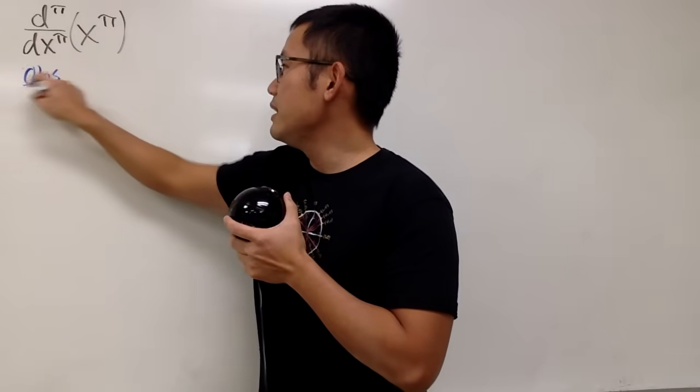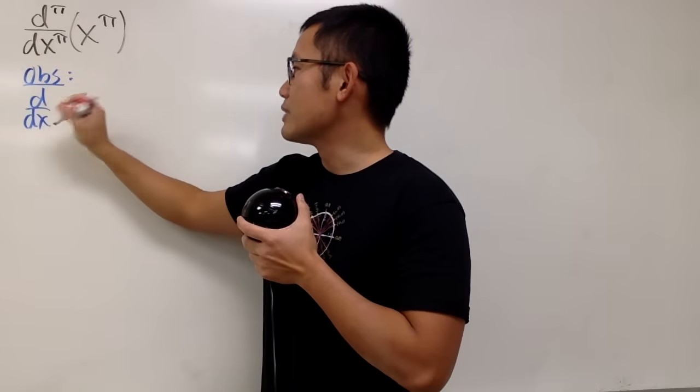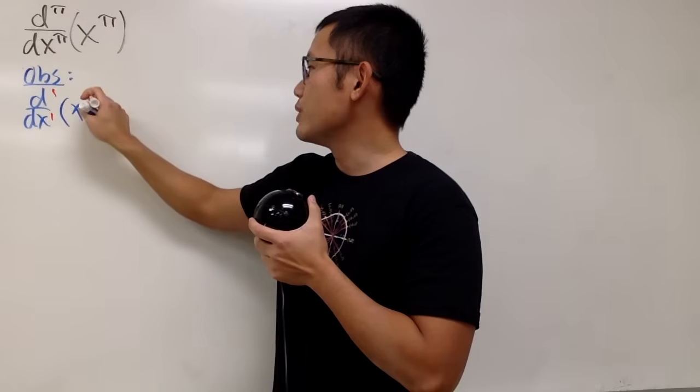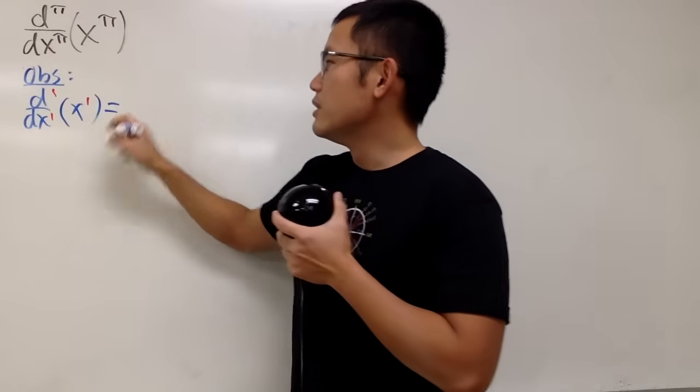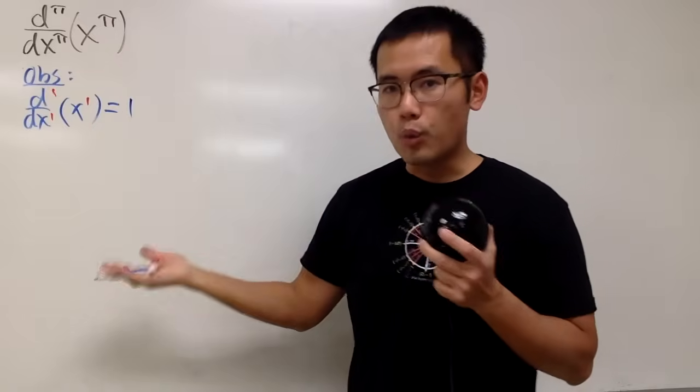So let's look at some easier cases. Suppose we have d/dx, and let's say we just have 1 and 1, and the input is x to the 1, like this. That means you do the first derivative of x to the 1st power, and of course we just get 1. That's it.